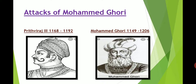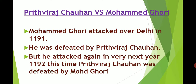Prithviraj III was born in 1168 and died in 1192. Muhammad Ghori was born in 1159 and died in 1296. Muhammad Ghori attacked Delhi in 1191 and was defeated by Prithviraj Chohan at that time. But he attacked again the very next year, in 1192, and this time Prithviraj Chohan was defeated by Muhammad Ghori.